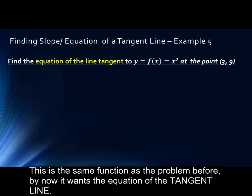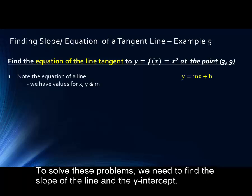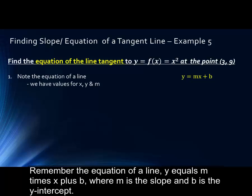This is the same function as the problem before, but now it wants the equation of the tangent line. To solve these problems, we need to find the slope of the line and the y-intercept. Remember the equation of a line, y equals m times x plus b. Here, m is the slope and b is the y-intercept.